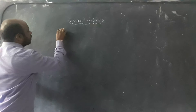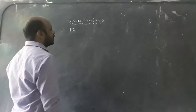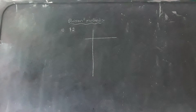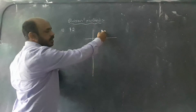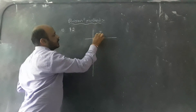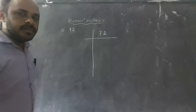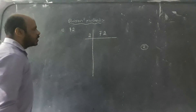In the division method, see children — for example, I am taking 72. In this division method, we draw one standing line and one sleeping line. Whatever number we are doing, we have to write it on the right side of the standing line. So write 72 on the right side. 72 is an even number, so even prime number — that is 2 — we will use.